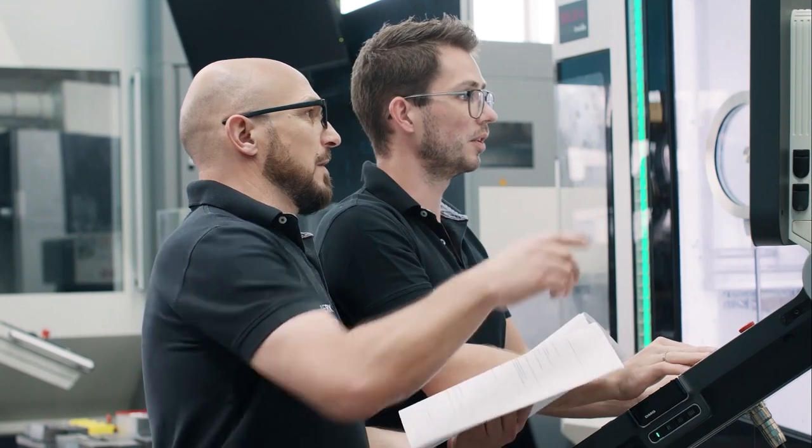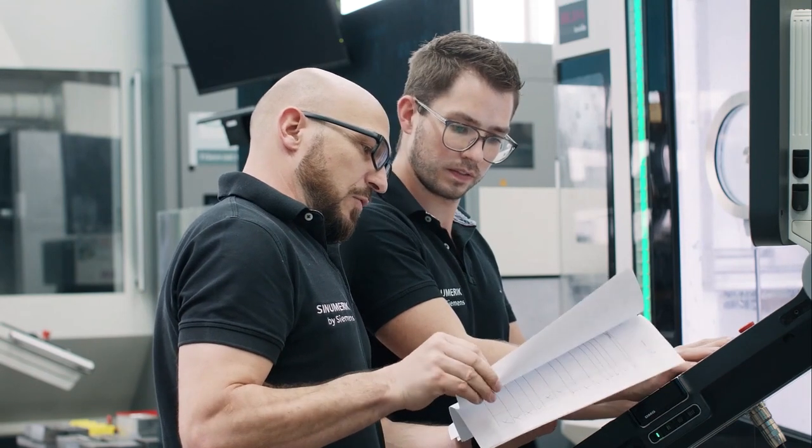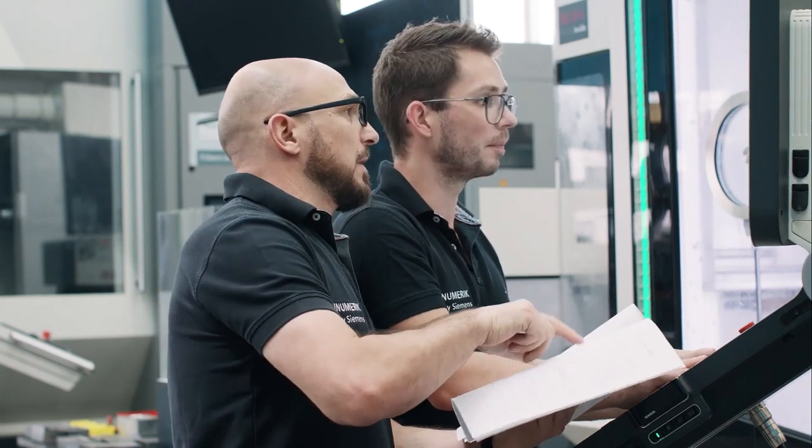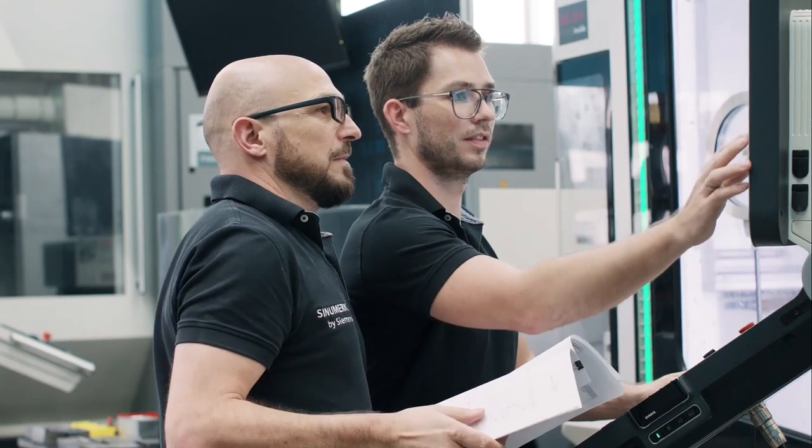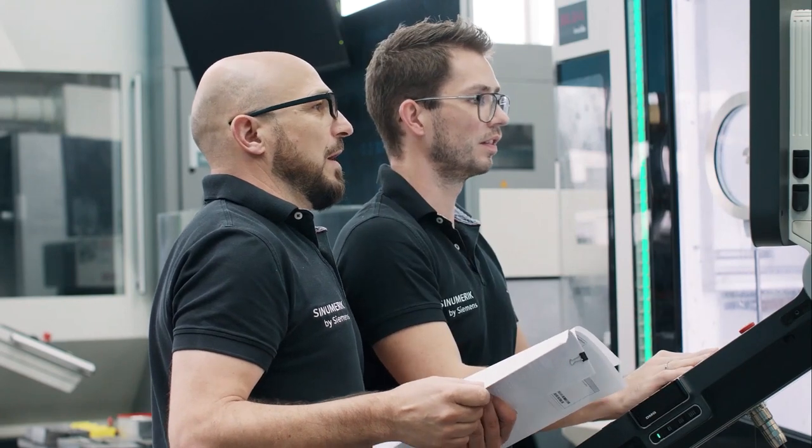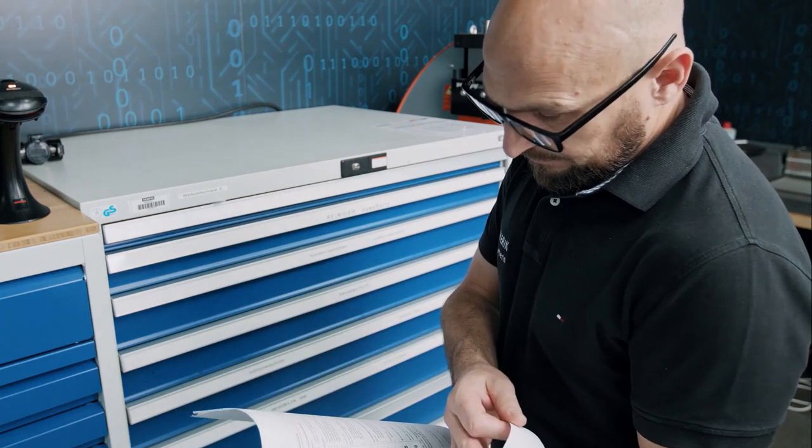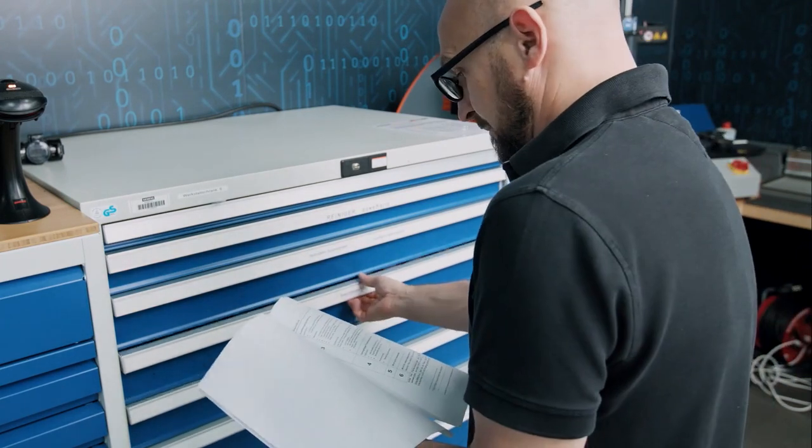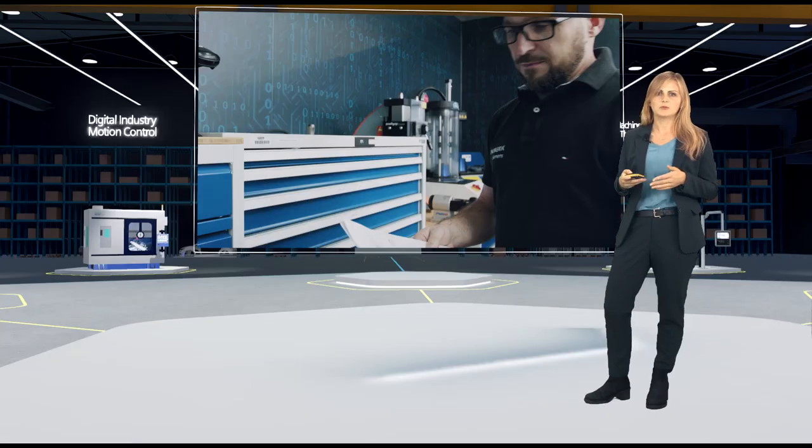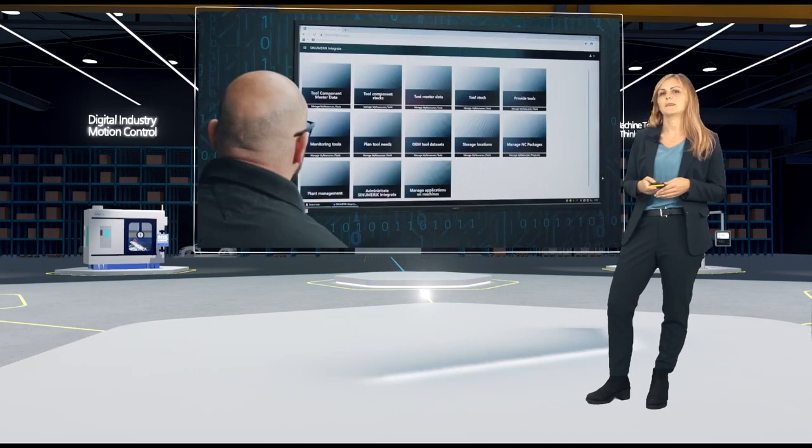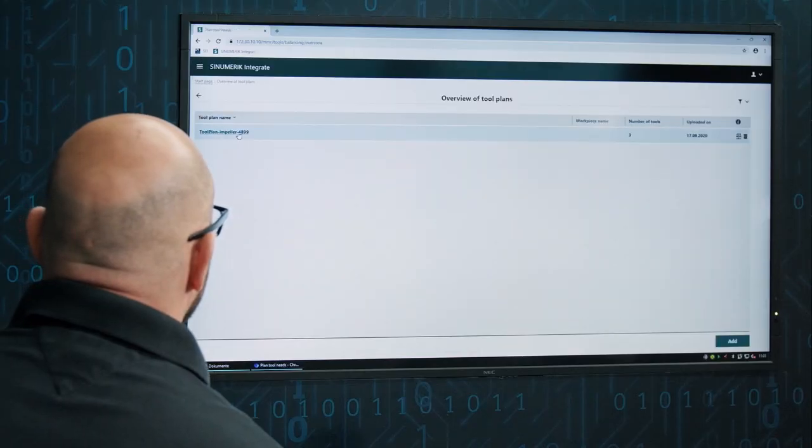If the so-called balancing is carried out manually, that means without software support, it can look like this. The machine operator receives a tool plan, usually printed out, which he looks at and compares with the tools on the machine. If he discovers that further tools are needed, he goes on a search in the available cabinets. And if he cannot find what he's looking for there, he turns to the tool presetter. This involves a lot of walking and manual work steps.